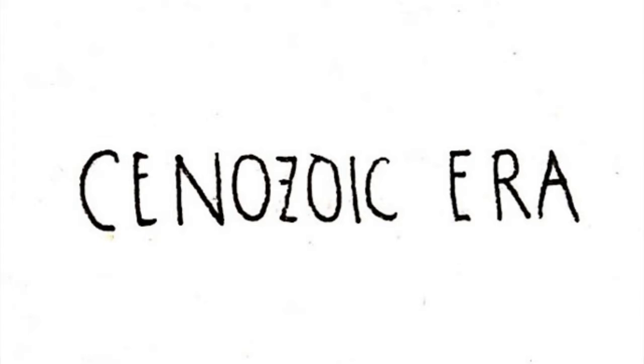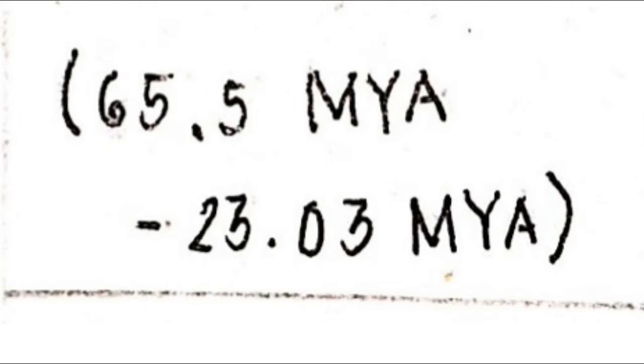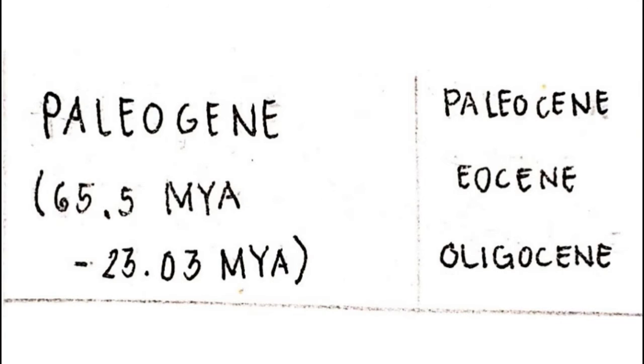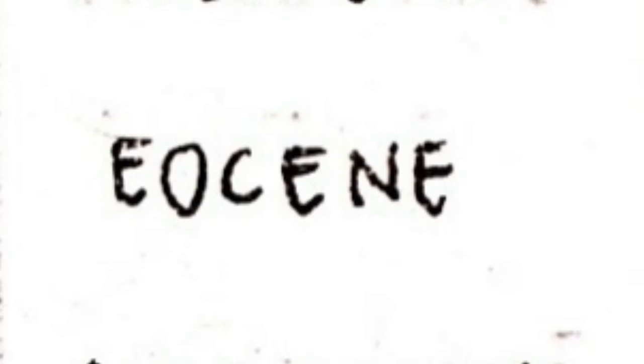The Cenozoic era is composed of three major periods. The first of the three, the Paleogene period, began 65.3 million years ago and ended 23.03 million years ago. It is in turn composed of three epochs: the Paleocene epoch, followed by the Eocene epoch, and lastly the Oligocene epoch.